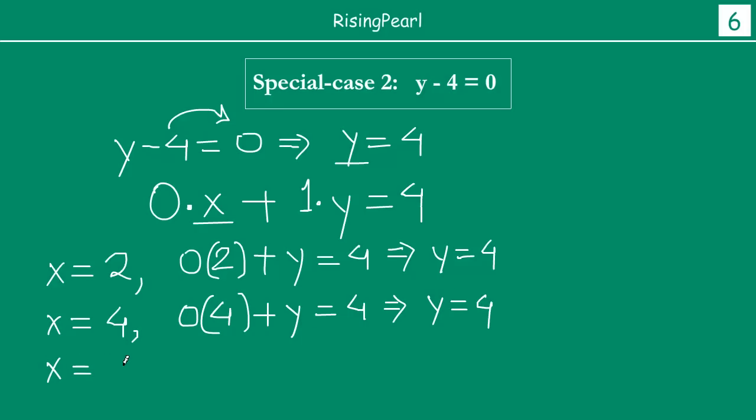Then, dosto, chalo, maan lijiye. Now, this time, let us take x equal to 6. So 0 times again 6 plus y is equal to 4. So this gives us 0 times 6 is 0, so left hand side me reh jaati hai sirf y. And we again get y equals to 4.